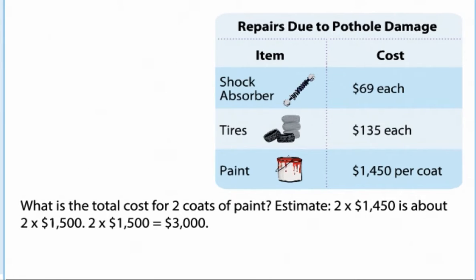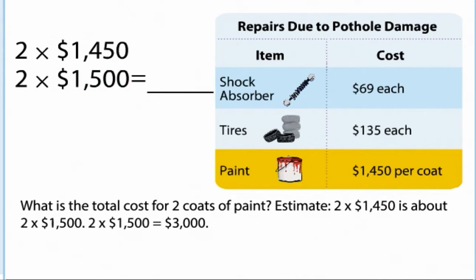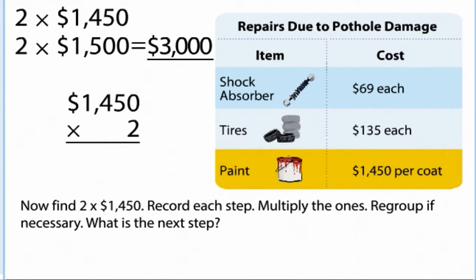What is the total cost for two coats of paint? Estimate: 2 times $1,450 is about 2 times $1,500. 2 times $1,500 equals $3,000.